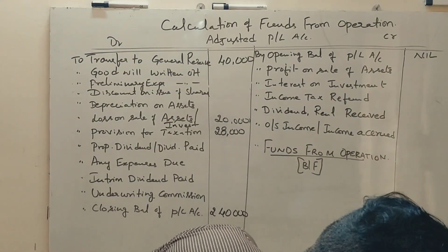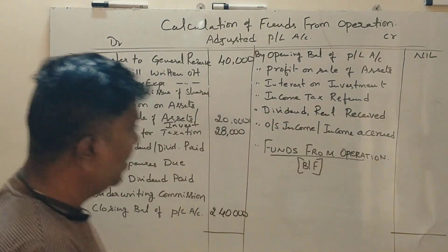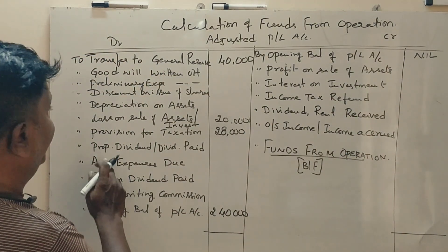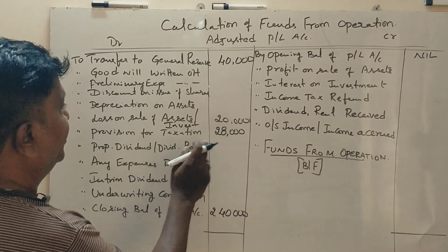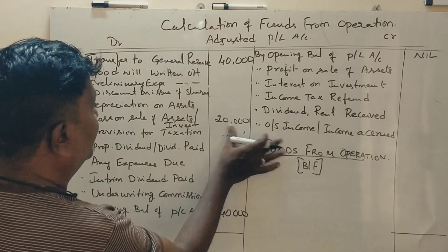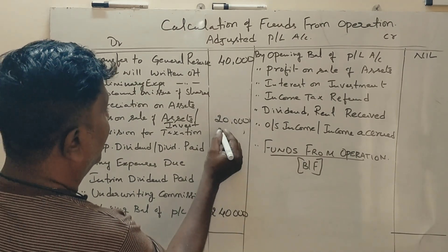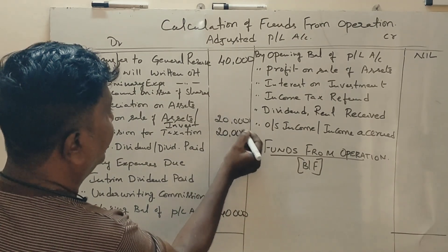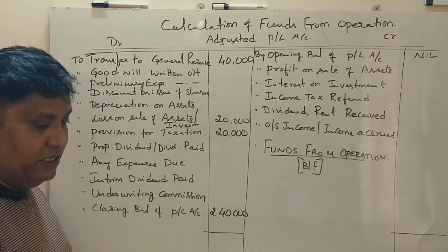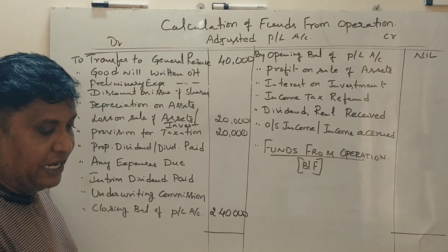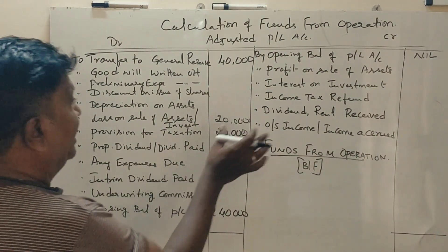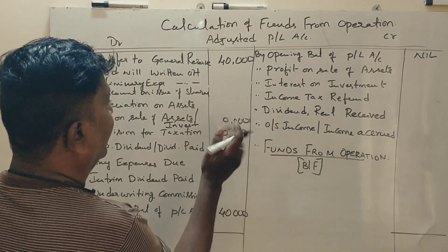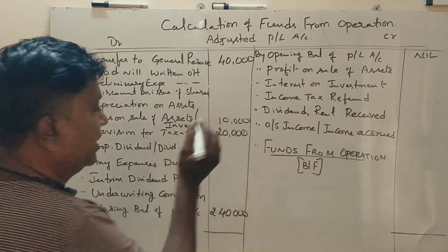Provision for taxation is 20,000 and loss on sale of investment is 10,000.